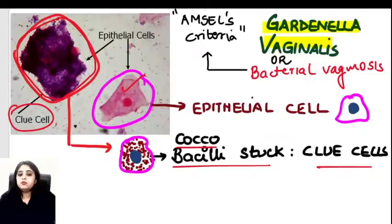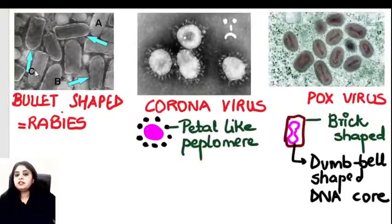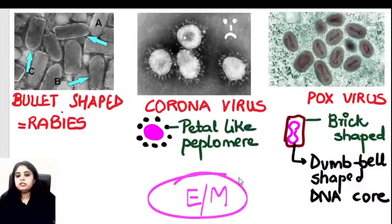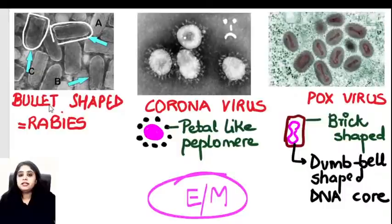Moving to virology — viruses are visualized under electron microscopy (black and white photos). Bullet-shaped virus: deadly, 100% fatal — that is rabies. Bullet = deadly = rabies. Crown-shaped virus with tiny projections on the surface: coronavirus. No need to revise this one!